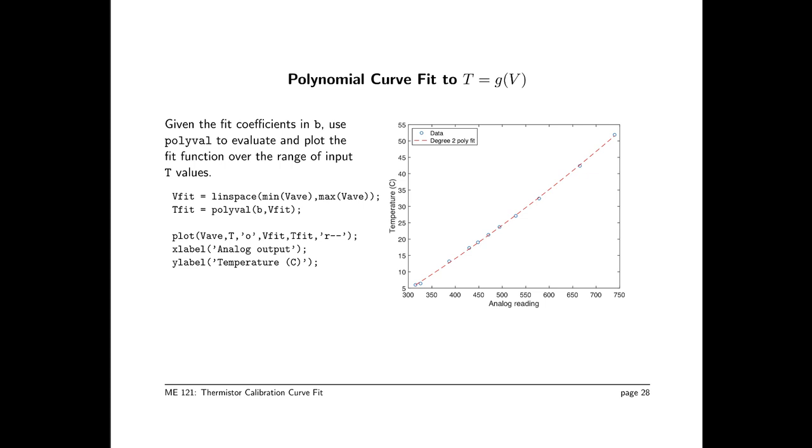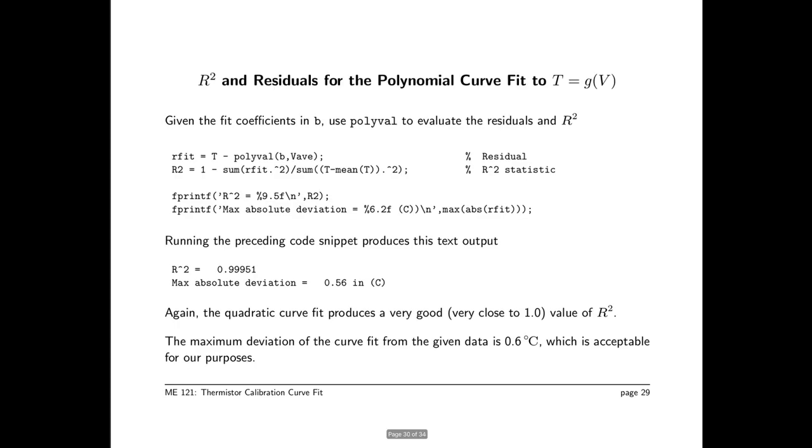You might well imagine that some of the variation in the input data is really due to some experimental variability, not any deficiency in the least squares curve fit. Once again, we evaluate the residuals and the r-squared statistic. The formulas are the same as before. We've just swapped the meaning of the input and output variables. The preceding code gives us r-squared of 0.995 and a maximum deviation of 0.56 degrees C. Again, the quadratic curve fit looks really good. And the maximum deviation is only 0.6 degrees C, which is really acceptable for our purposes.